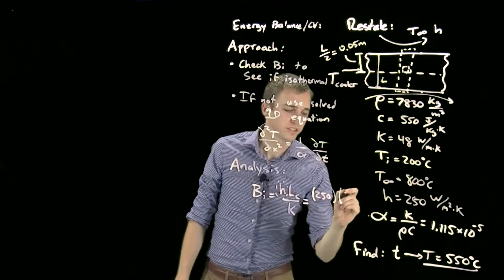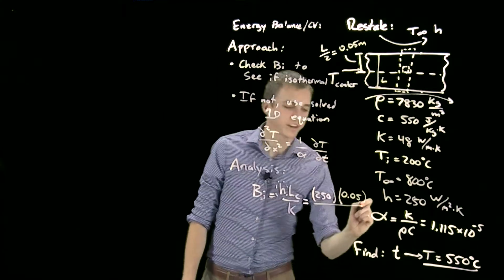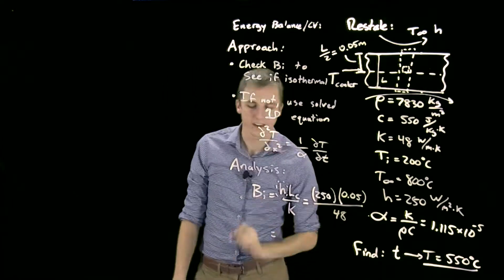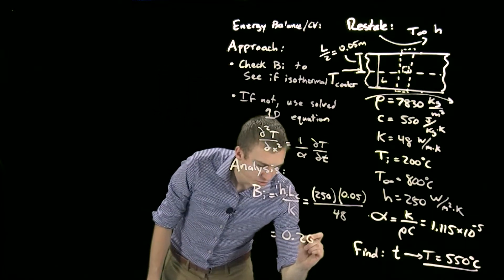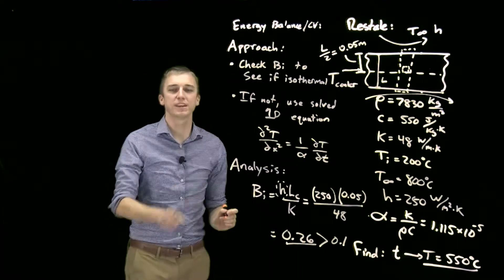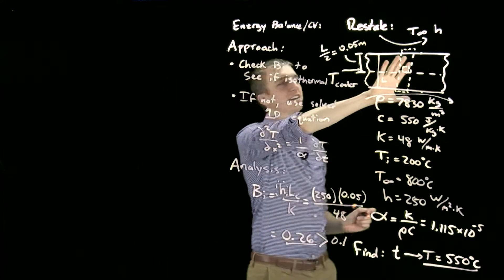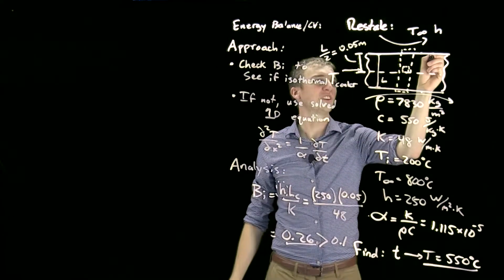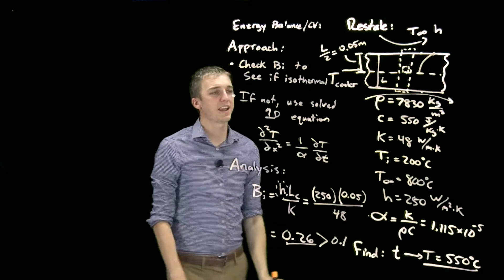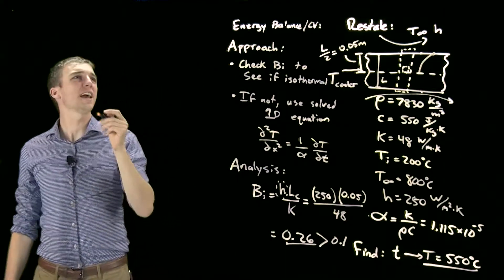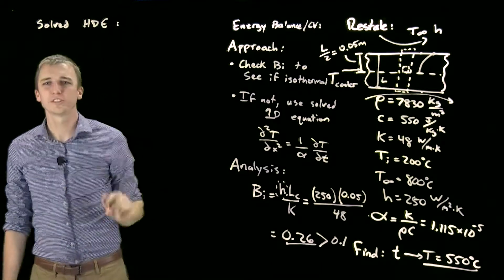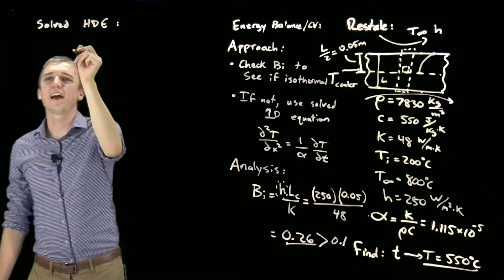We're going to use L/2 or 0.05 meters as our characteristic length since it's a plain wall, and we're dividing by thermal conductivity, which is 48. Plugging all those numbers in, we get Bi = 0.26, which is greater than 0.1. Because it is greater, this is not an isothermal piece of material. In other words, our temperature here is hotter and decreases significantly to the centerline, which means we can't use lumped capacitance. Instead, we're going to have to use a solved heat diffusion equation approach.